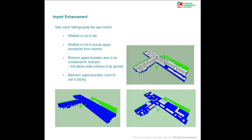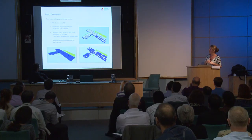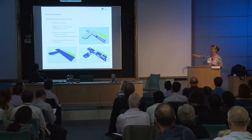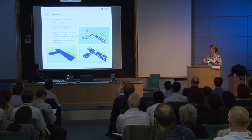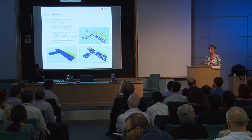Space boundaries from columns — you can just tell it to ignore them altogether. A minimum space boundary area: for very small rooms like cupboards, there might be a separation boundary set up as a separate room or zone; you can tell it to ignore anything below a certain surface area. The same for maximum space boundary count — if it's finding, say, 20 or 30 shapes making up a broken ceiling due to columns, you can tell it that above a certain level it should assume it's a single surface. It's all about simplifying so that the virtual environment can make sense of those surfaces and their relationships for the purposes of analysis.